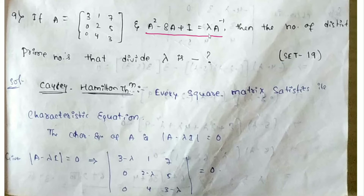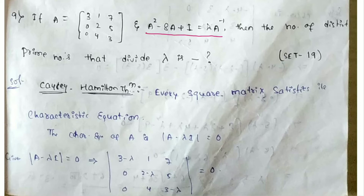Here we will find the value of λ and then find the distinct prime numbers that divide λ. We will use the Cayley-Hamilton theorem to solve this — finding A², A inverse, and substituting into the equation.